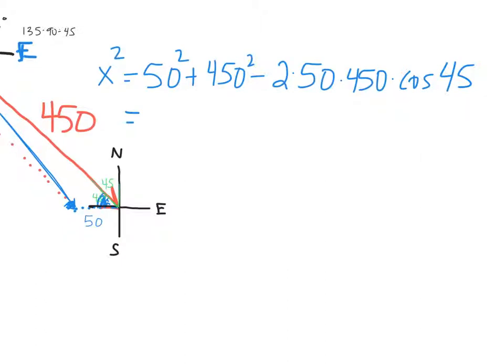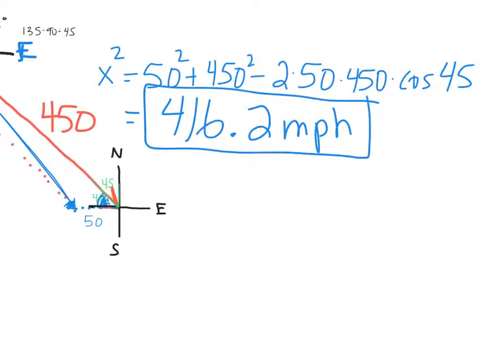Okay so when I put this into my calculator and I take the square root of it, 50 squared plus 450 squared minus 2 times 50 times 450 times the cosine of 45. I get a speed of 416.2 miles per hour. So that's how fast the plane looks like it's going from the ground is 416.2.